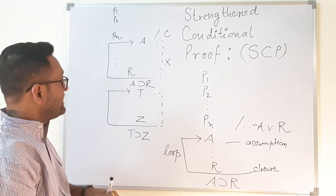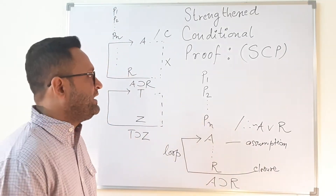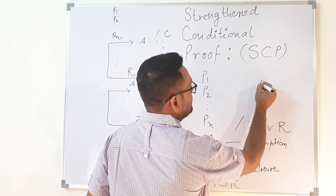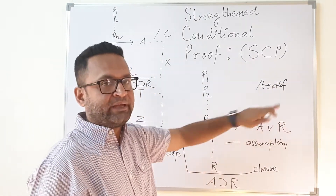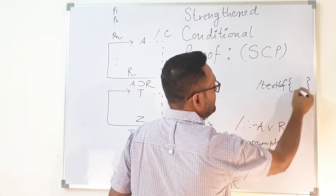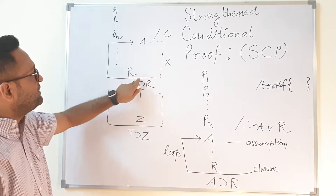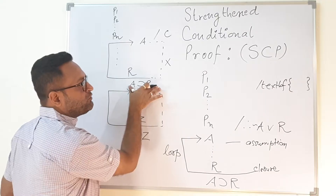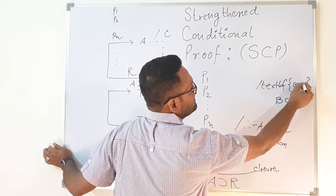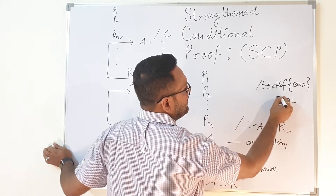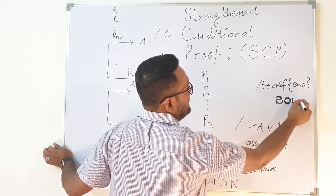Once the loop is closed, the steps inside it are closed. This is similar to programming — like an HTML bold tag: once you open the bold tag and write content, as soon as you close it, the impact of that tag ends. Similarly, once you put the closure, the impact of those assumed steps ends there. You cannot use those inner steps after the closure, just as bold formatting stops after the closing bracket.